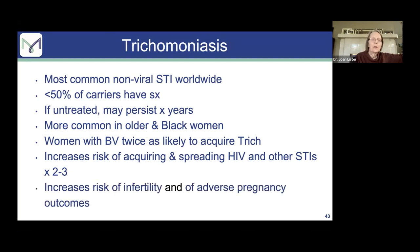Worldwide, trich is the most common STI, and this is the one where male partners have to be treated. Not everybody will have symptoms, so this can last for a long time. Trich is more common in older women and women of color. If you have BV, you're more likely to acquire trich. It also increases the risk of acquiring and spreading HIV and other STIs — by two to three times — and increases the risk of infertility and adverse pregnancy outcomes.